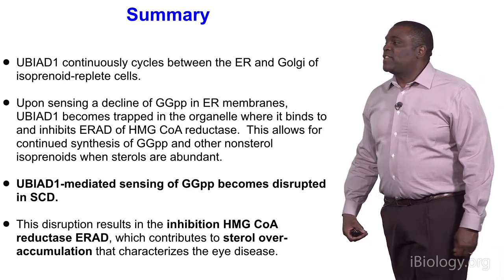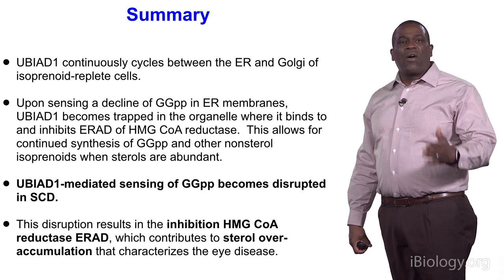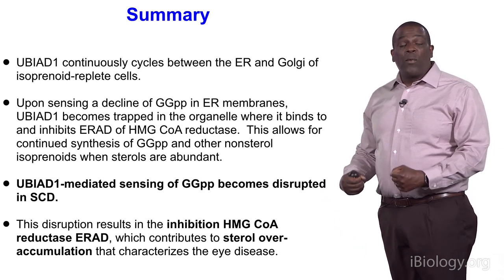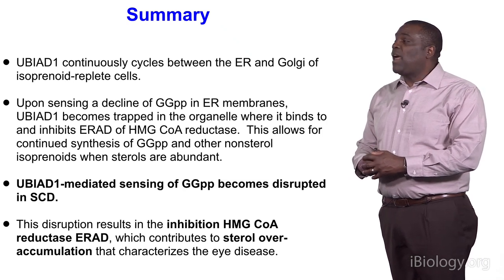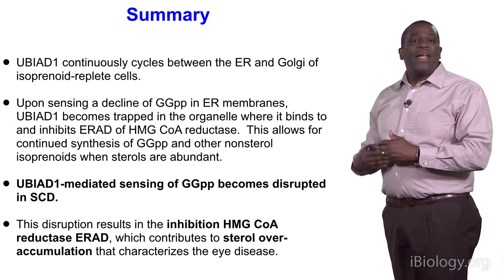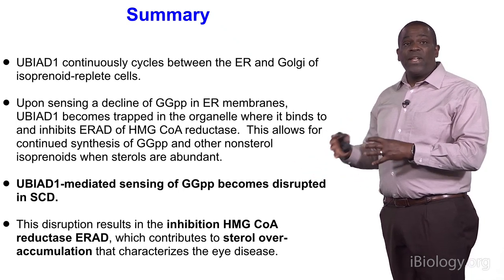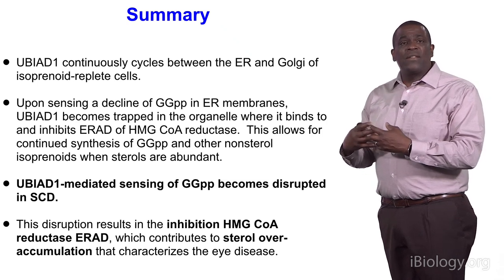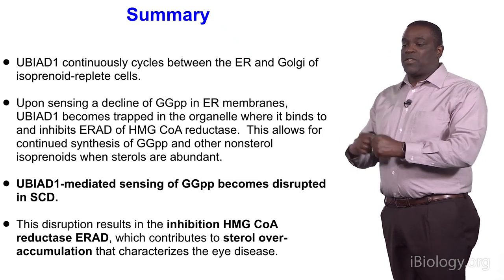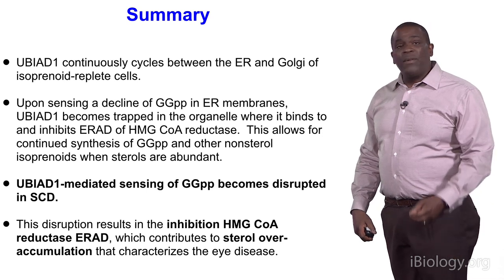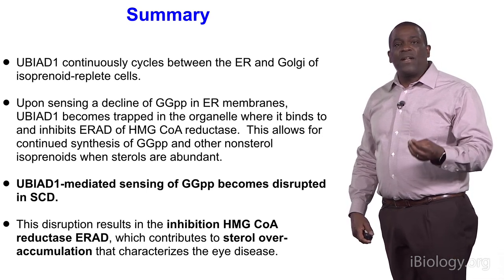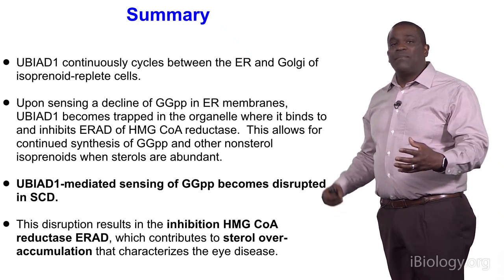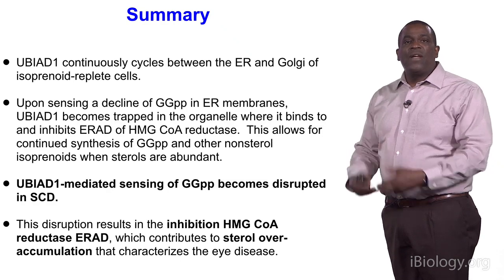In summary, UBIAD1 continuously cycles between the ER and the Golgi. When it senses a decline in GGPP levels in the ER, it becomes trapped in the ER, where it binds reductase and blocks its degradation, allowing continued GGPP synthesis even when sterols are abundant. Once GGPP accumulates to sufficient levels, it binds UBIAD1, causing dissociation from reductase and translocation to the Golgi. In SCD, this UBIAD1-mediated GGPP sensing is disrupted, inhibiting reductase ERAD and contributing to the sterol overaccumulation that characterizes the disease.